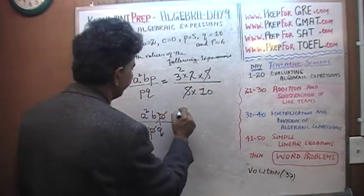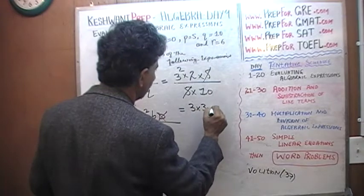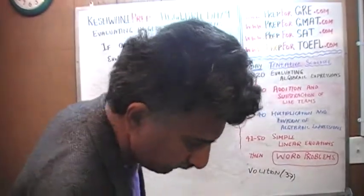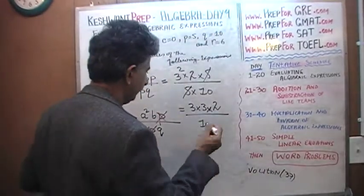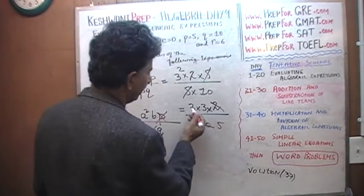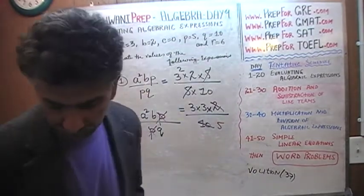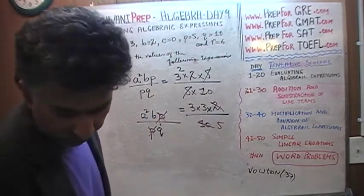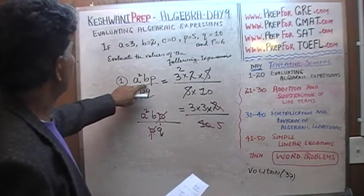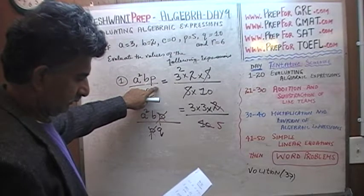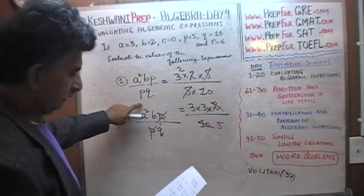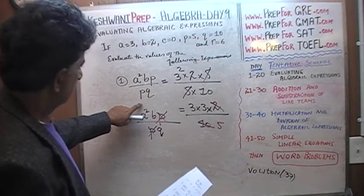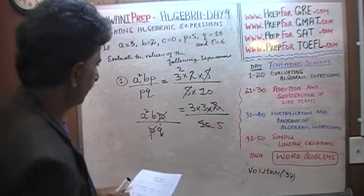Let's simplify: A squared times B over Q is 3 times 3 times 2 over 10. Divide the top and the bottom by 2 — that takes out the 2 and this becomes 5. There's nothing common between the 3s and the 5, so the answer is 9 over 5.